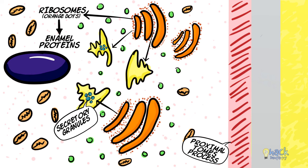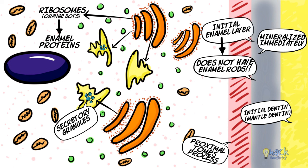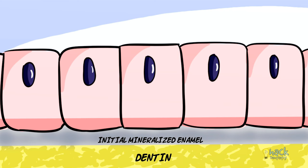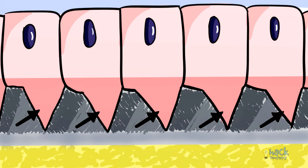The initial layer of enamel matrix is laid down on the mantle dentine and is mineralized immediately; hence this initial layer of enamel does not contain enamel rods. As more enamel matrix is laid down, the ameloblast moves away from the enamel, with the Tomes' process developing an extension from the proximal portion. This extension is the distal portion of the Tomes' process, and it keeps elongating as more enamel matrix is secreted, with the distal portion penetrating the enamel.